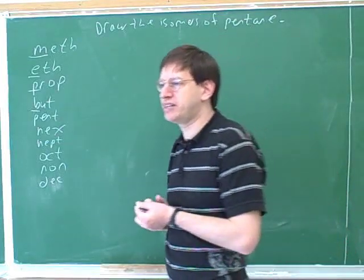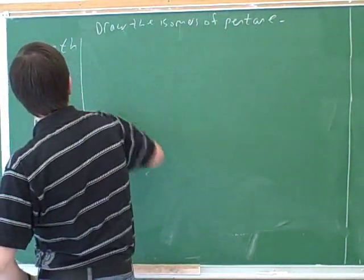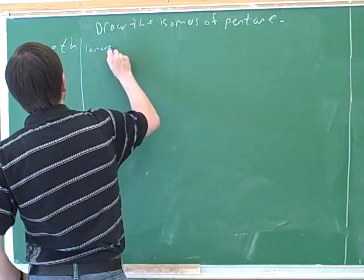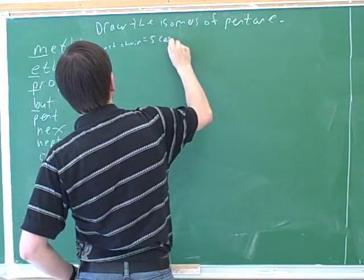OK, so let's try drawing the isomers of pentane. What should we draw first? It has five carbons. So first, we should do an example where the longest chain equals five carbons.